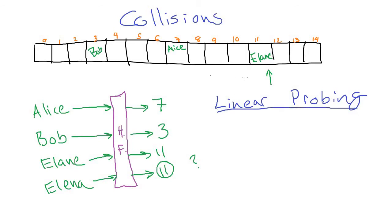With linear probing, when you have a collision — like we want to put Elena in slot 11 — we first check whether that slot is taken, and if so, we just go on to the next slot. So in linear probing we'd put Elena right past Elaine in slot 12.